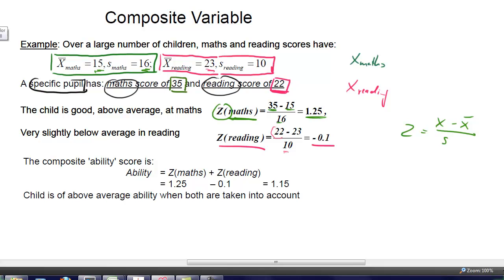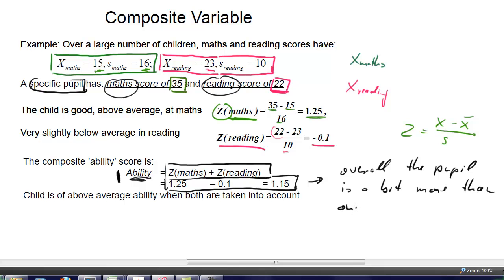If we now want to combine this measure, we can do that with a composite variable. Let's call it ability in maths and reading. What we can do is we can just add the two standardized scores. What we get is 1.15. That will tell us that overall the pupil is a bit more than one standard deviation better than the mean in maths and reading.